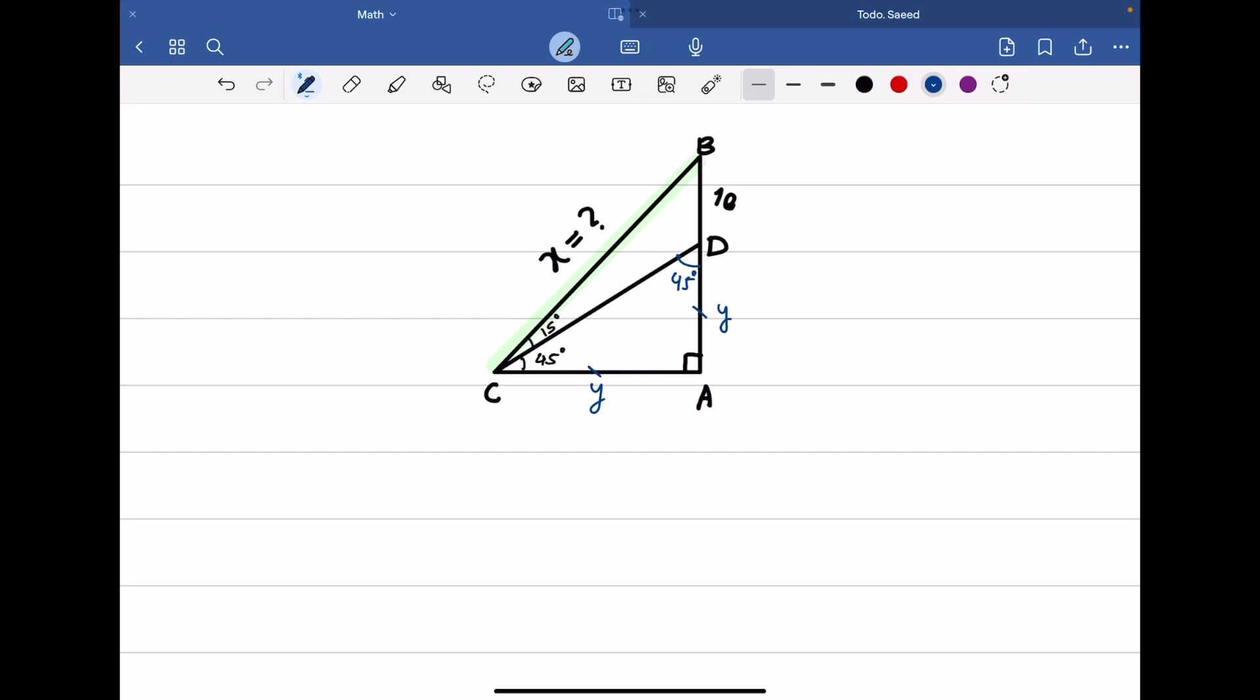Now we know that the length of AB is equal to 10 plus Y. Let's use one trick: the tangent relation of angle C.